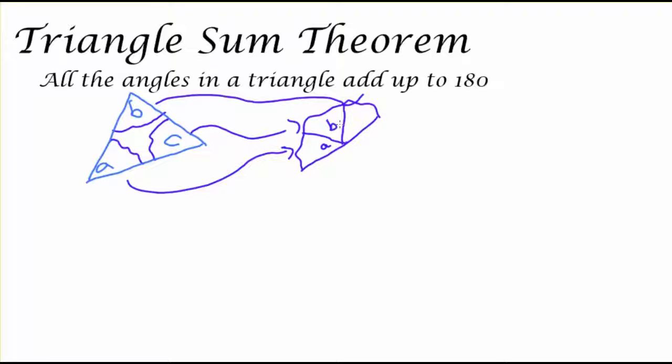So that angles A, B, and C will make a straight line. And that straight line will end up being 180 degrees like a straight angle. So all the angles in every single triangle add up to 180 degrees.